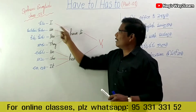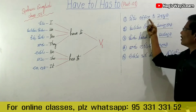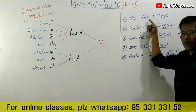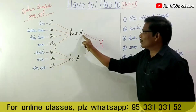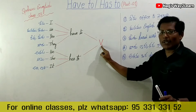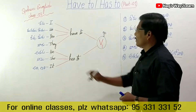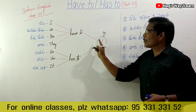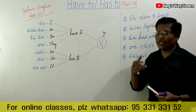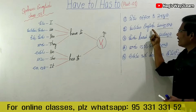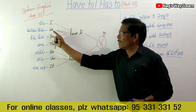I have to — the verb is called first form. I have to go to the office. I have to speak English.